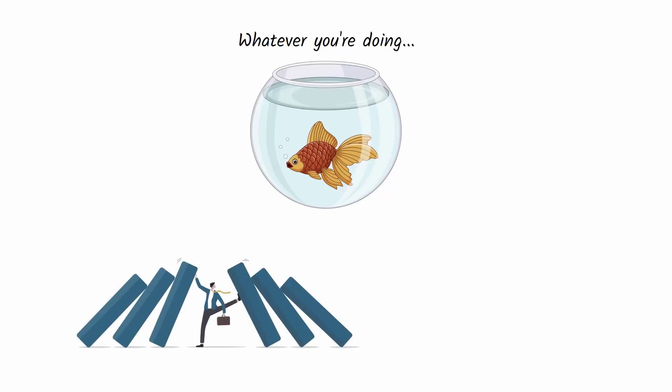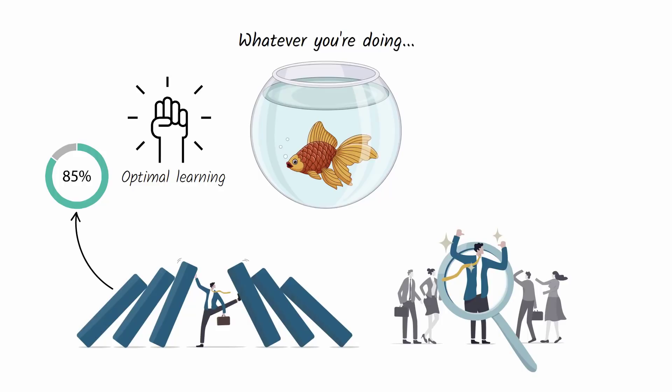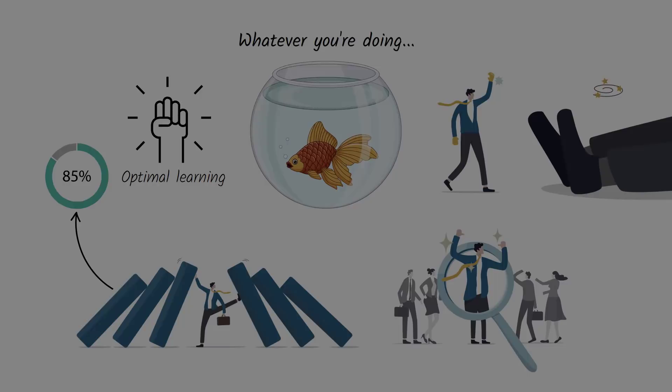Whatever you're doing, aim to be a big fish in a small pond. Compete in environments where you feel challenged but know you're one of the best. Recent research says that the win rate for optimal learning is 85%. If you can find an environment where you feel like you're winning 85% of the time, you will steadily develop the skill and confidence to take on giants.